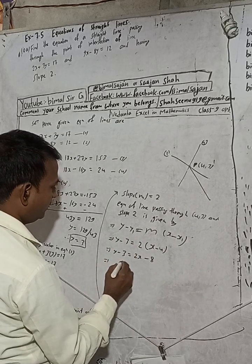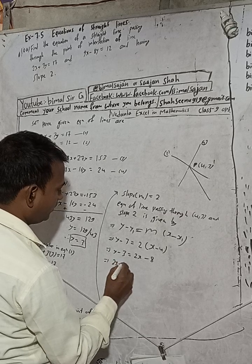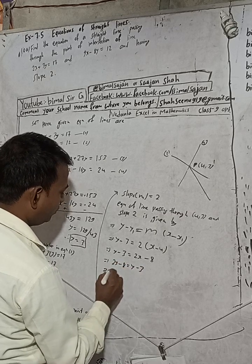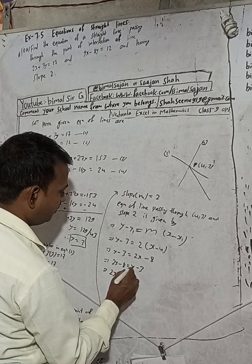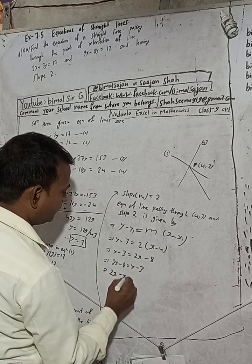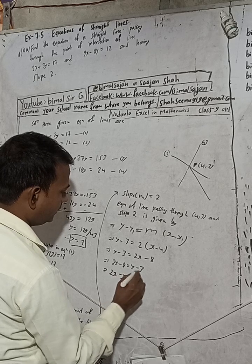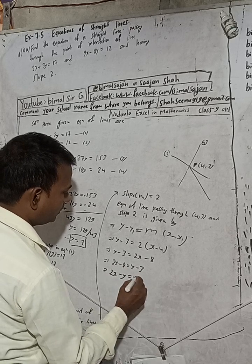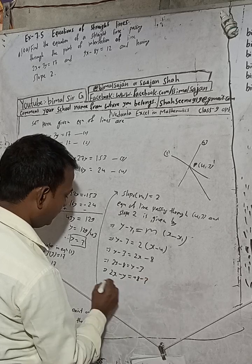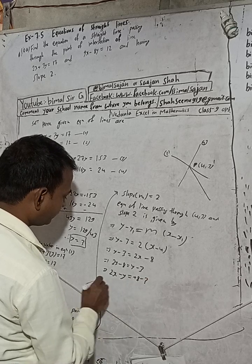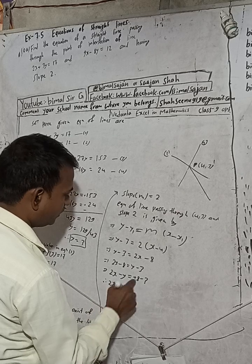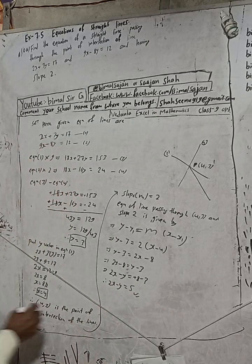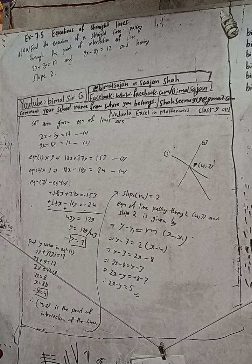Expanding: y - 3 = 2x - 8. Rearranging: 2x - y = 8 - 3, therefore 2x - y = 5. This is the required equation of the line.